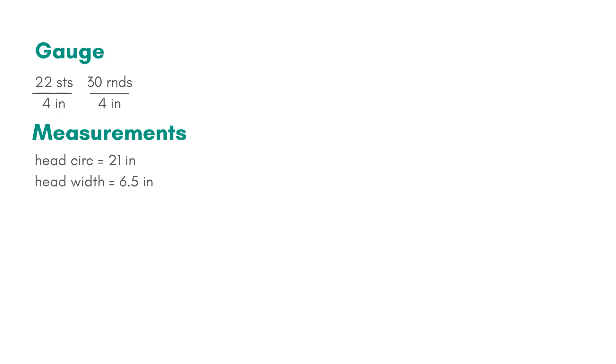Whenever I'm solving a problem, I like to start by listing the things that I already know. I know my gauge is 22 stitches and 30 rounds per 4 inches. I also know that my head is 21 inches around and about 6.5 inches wide.